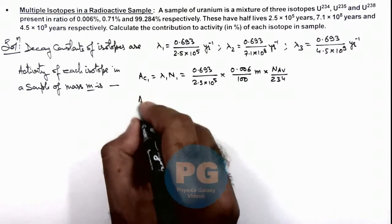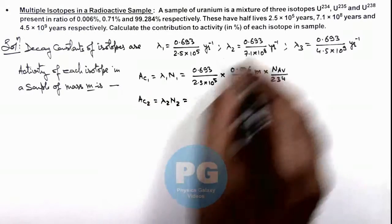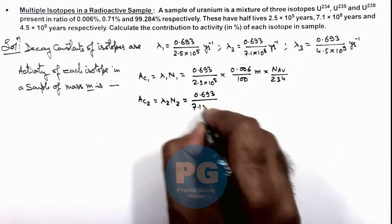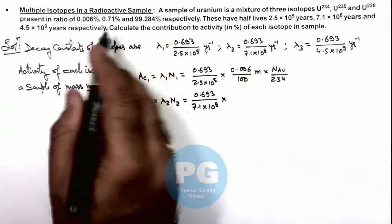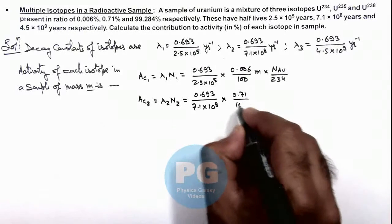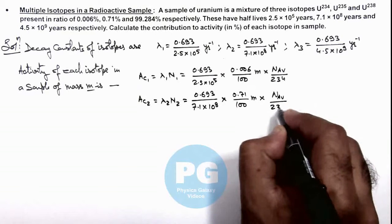Similarly for the second isotope it is lambda 2 n2, that can be given as lambda 0.693 by 7.1 × 10^8 multiplied by its mass ratio 0.71 by hundred times m, multiplied by Avogadro number by 235.